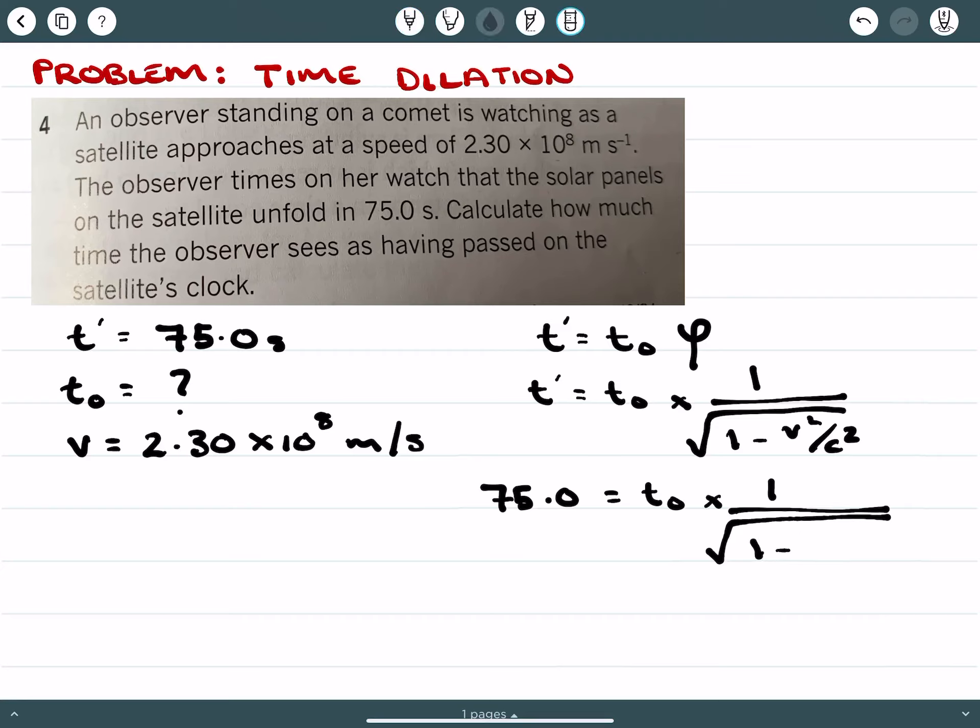So v was given to us before as 2.3 × 10^8 all squared, all over 3.0 × 10^8 all squared. And there is a nice thing with the Lorentz factor that you can just get rid of these prefixes to ease your calculations as you would.